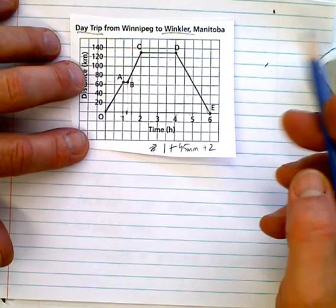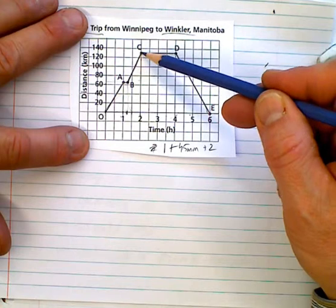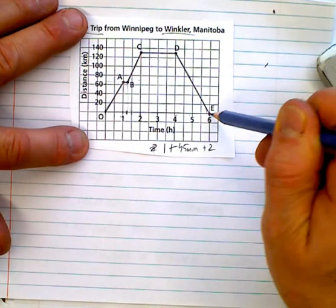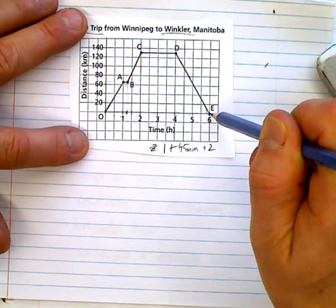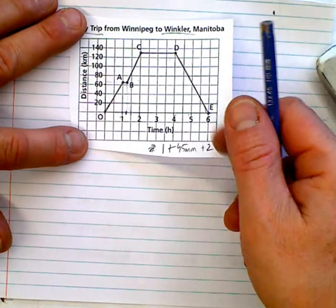What's the total distance they drove? Well, it took them 100 and looks like 30 clicks to get there. 130 clicks to get back. So, you can tell the distance from Winnipeg to Winkler. So, there's a lot of information on here that's kind of hidden within the graph. And it's up to us to interpret them. That's basically it.